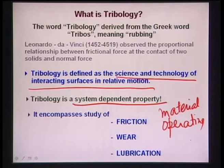Tribological properties also depend on operating parameters: sliding speed and load. If you change load from 5 N to 10 N for the same steel-versus-steel system, friction coefficient and wear rate will change. If sliding velocity changes from 1 m/s to 4 m/s, all tribological properties also change. Changing operating parameters or the counter body will change tribological properties.